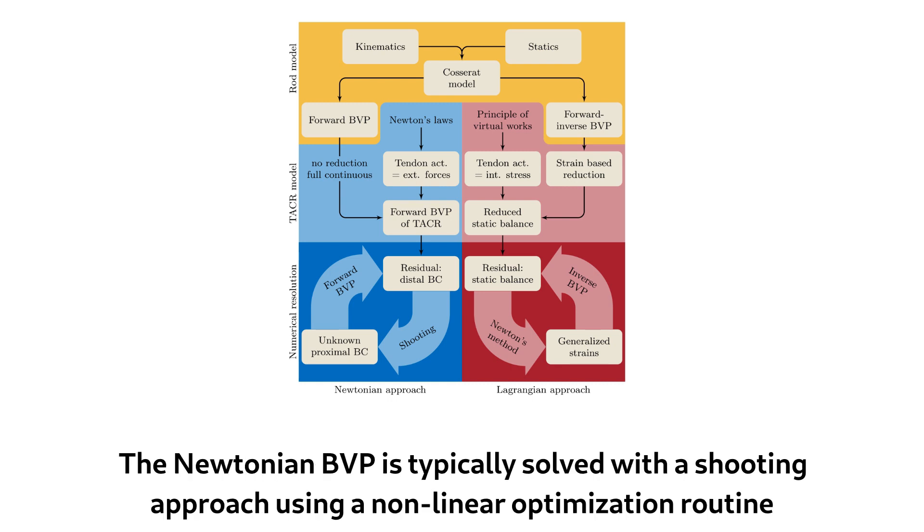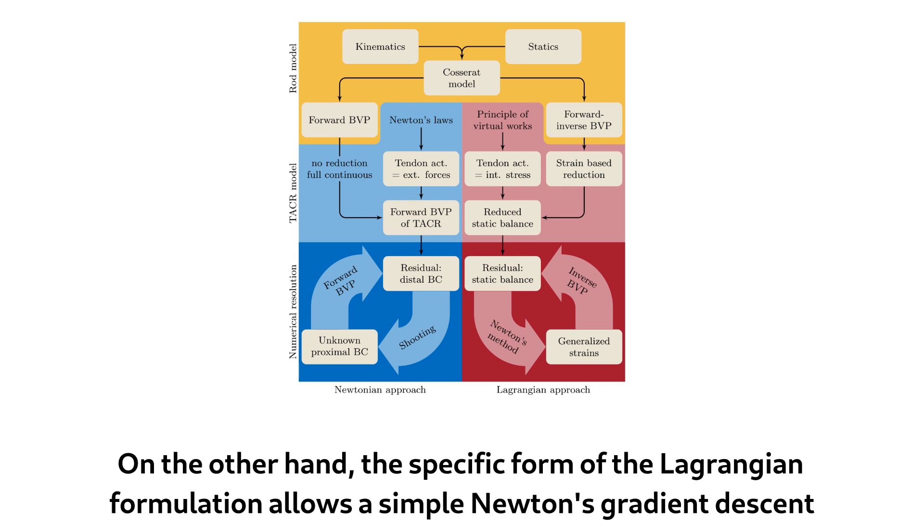The Newtonian BVP is typically solved with a shooting approach, using a non-linear optimization routine. On the other hand, the specific form of the Lagrangian formulation allows a simple Newton's gradient descent.